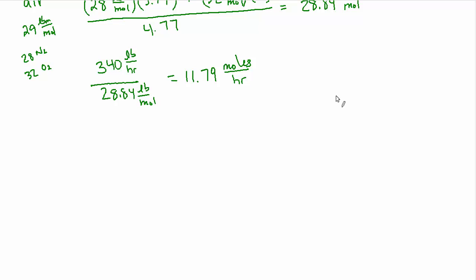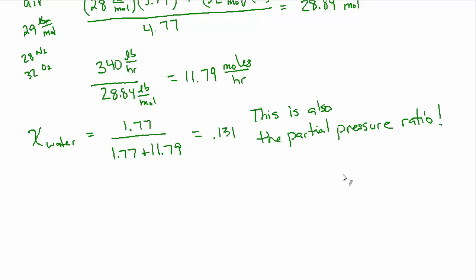we can find the mole fraction. We know the mole fraction for an ideal gas corresponds to the proportion of volumes of each and conveniently the partial pressure, which is where we're going with this. So let's work out that mole fraction. Mole fraction of water is the 1.77 moles per hour over 1.77 plus 11.79. So that's 0.131, or you can think of it as 13.1% of the volume is water vapor. And the big important point here is that this is also the partial pressure ratio. So by virtue of the fact that 13% of the volume is water, 13% of the absolute pressure, the total pressure is 85, 13% of that is coming from the water vapor.